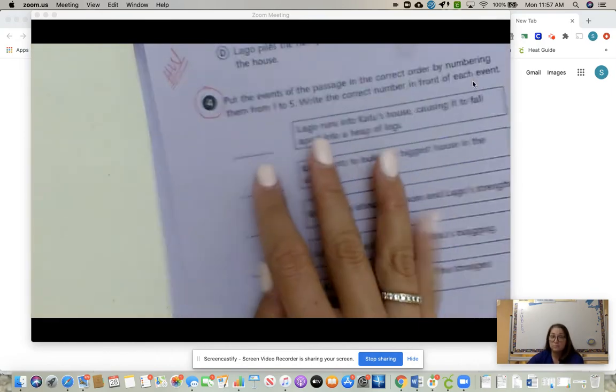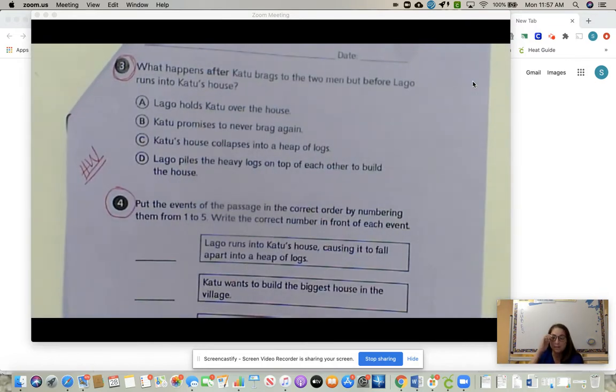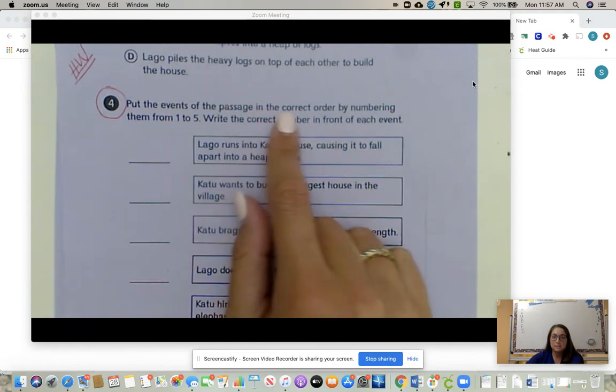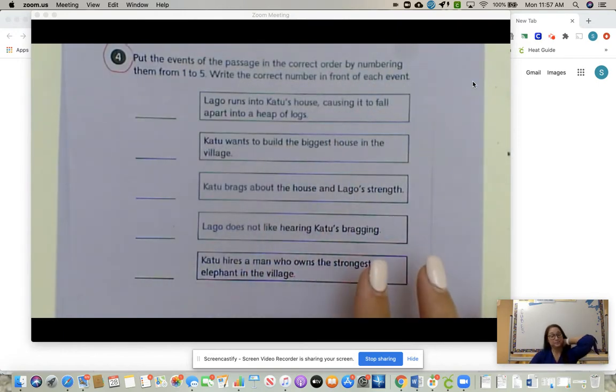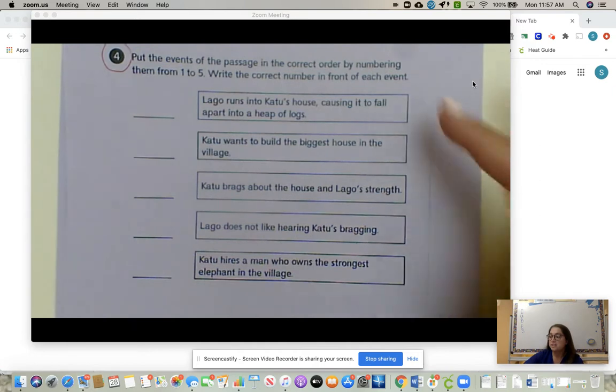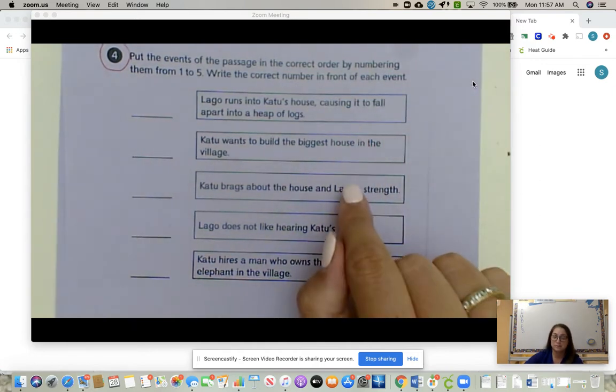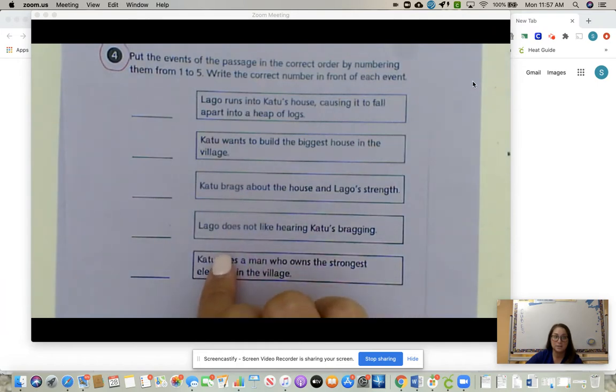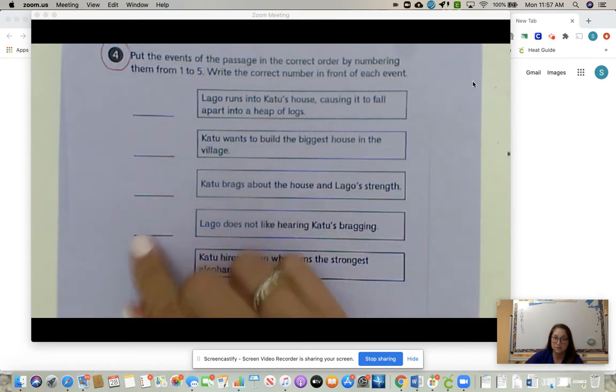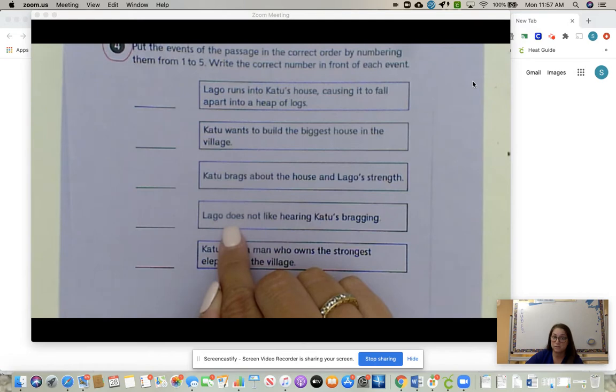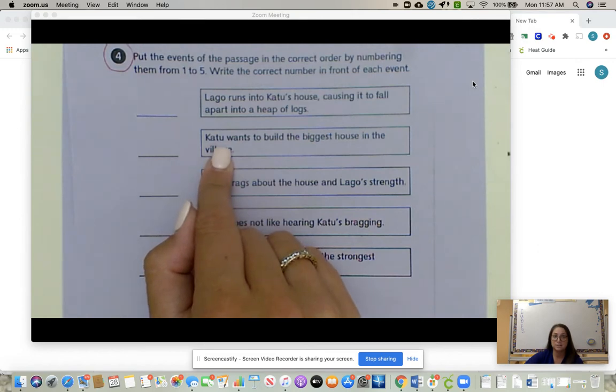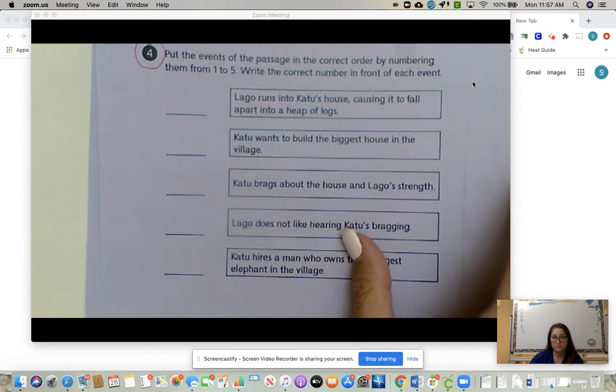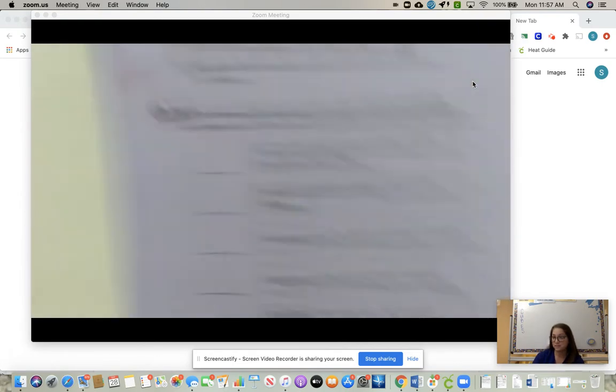So three and four are homework. Number four: put the events of the passage in the correct order by numbering them from one to five. Write the correct number in front of each event. That means we're practicing sequence. So you need to figure out out of these events, what happened first? Let's say Lago does not like hearing Cat two's bragging. Let's say that happened first, write a one. What happened after this in the story? Right here, write number two. Then what happened after Cat two wants to build the biggest house? And so you just keep numbering them so they're in order from what happened in the story. So that's your homework.